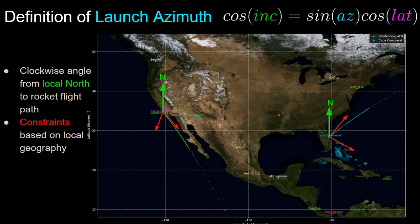We'll start with the definition of the launch azimuth angle, which is defined as the angle from the local north vector to the rocket flight path measured clockwise. Here in the Cape Canaveral launch, we are looking at a launch azimuth angle of around 45 degrees, and for the Vandenberg Space Force Base, the launch azimuth is right on the edge of the allowable value at around 140 degrees.